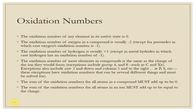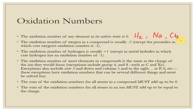Now in terms of identifying oxidation numbers, there are a few different rules. The oxidation number of any element in its native state is zero. So if it's a diatomic element like hydrogen H₂, it's zero. Sodium by itself is zero. Cl₂ is zero. Manganese in its native state is zero.